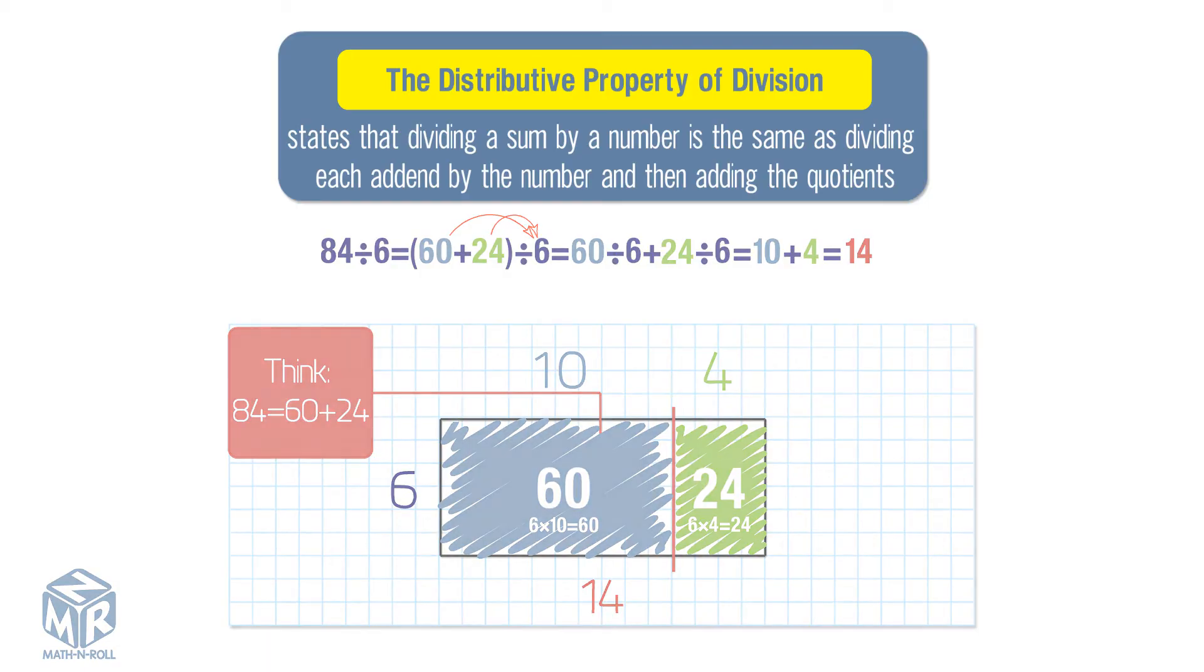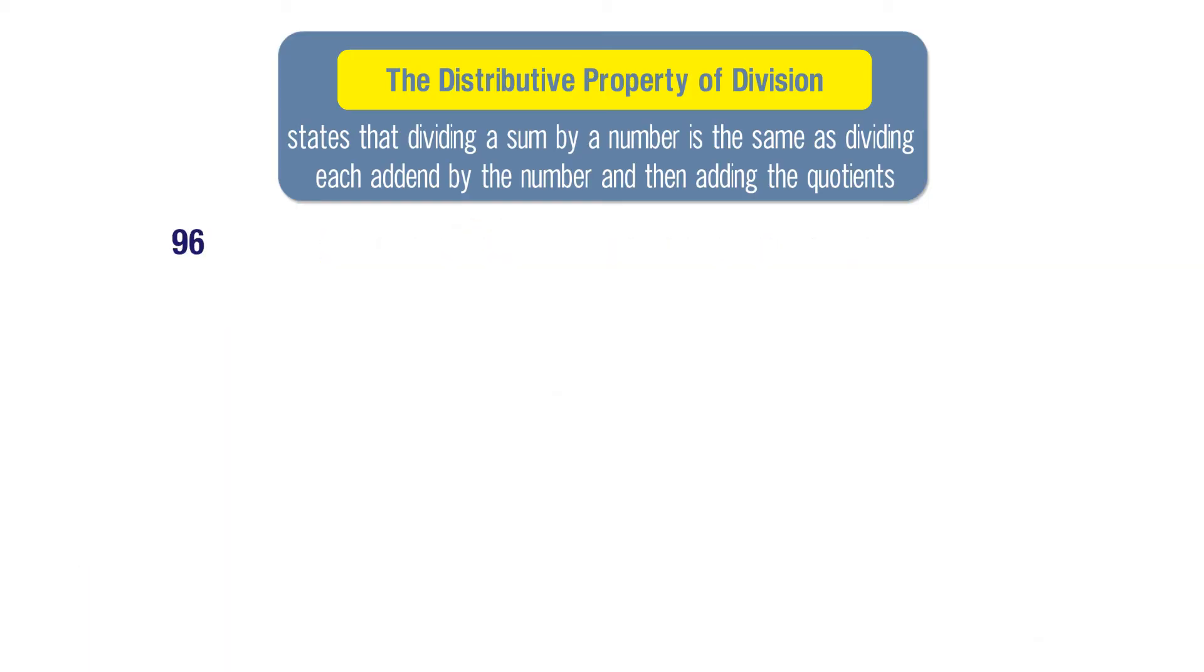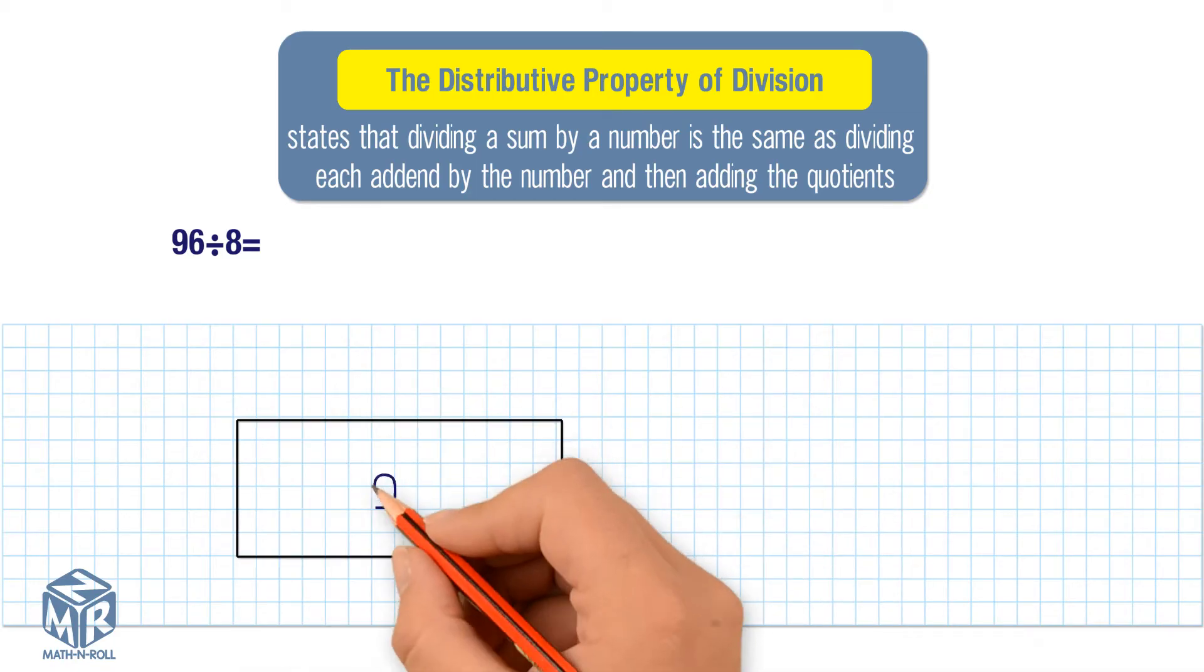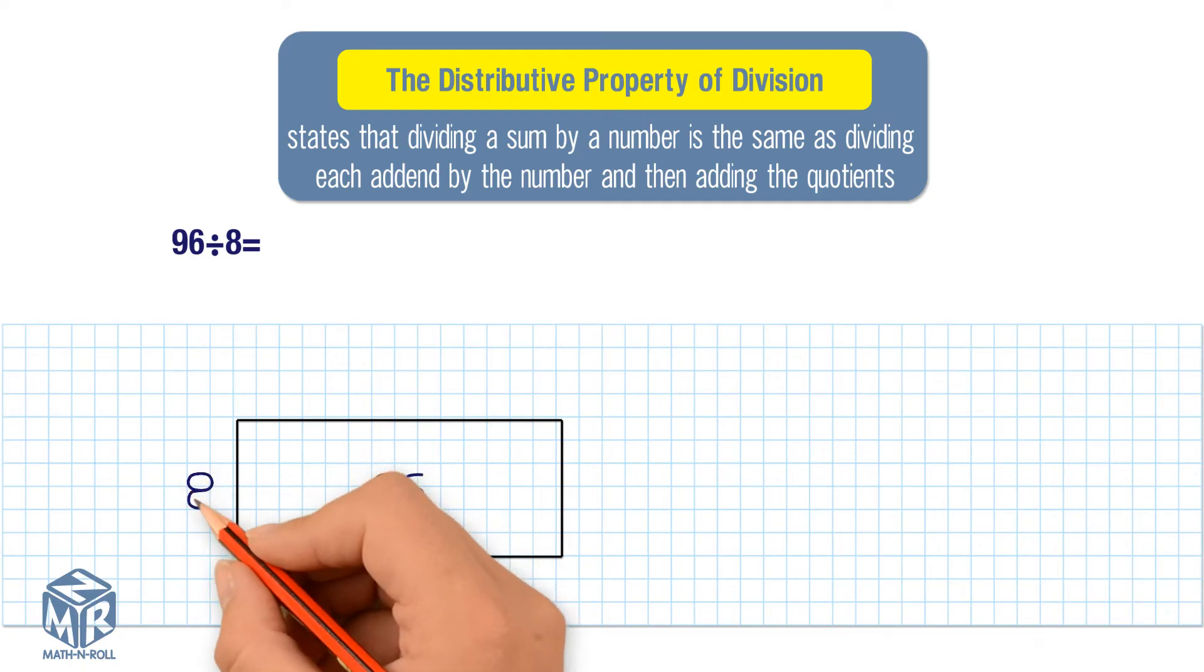Let's try another example. 96 divided by 8. The dividend, 96, goes inside the rectangle. The divisor, 8, goes on the left side.